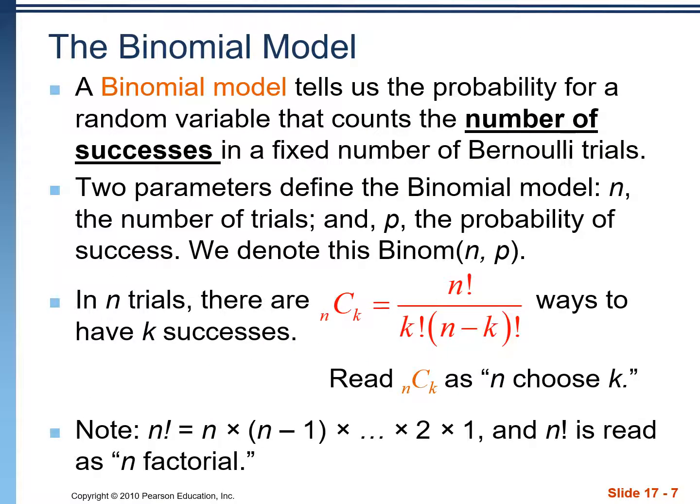Geometric probability models are also known as waiting time problems, where we're waiting until a certain event occurs. Compare that to the binomial model, which has a specific number of trials and we want to find a specific number of successes — we're counting a certain number of successes out of a specific number of trials.